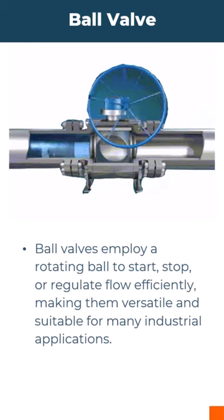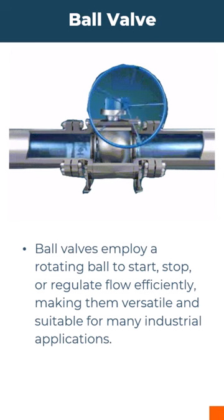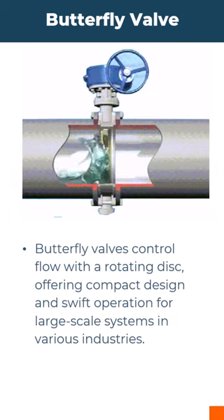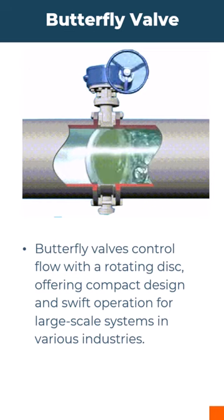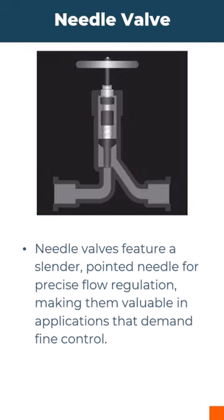Ball valves use a rotating ball to start, stop, or regulate flow efficiently. Butterfly valves control flow with a rotating disc, offering compact design and swift operation.